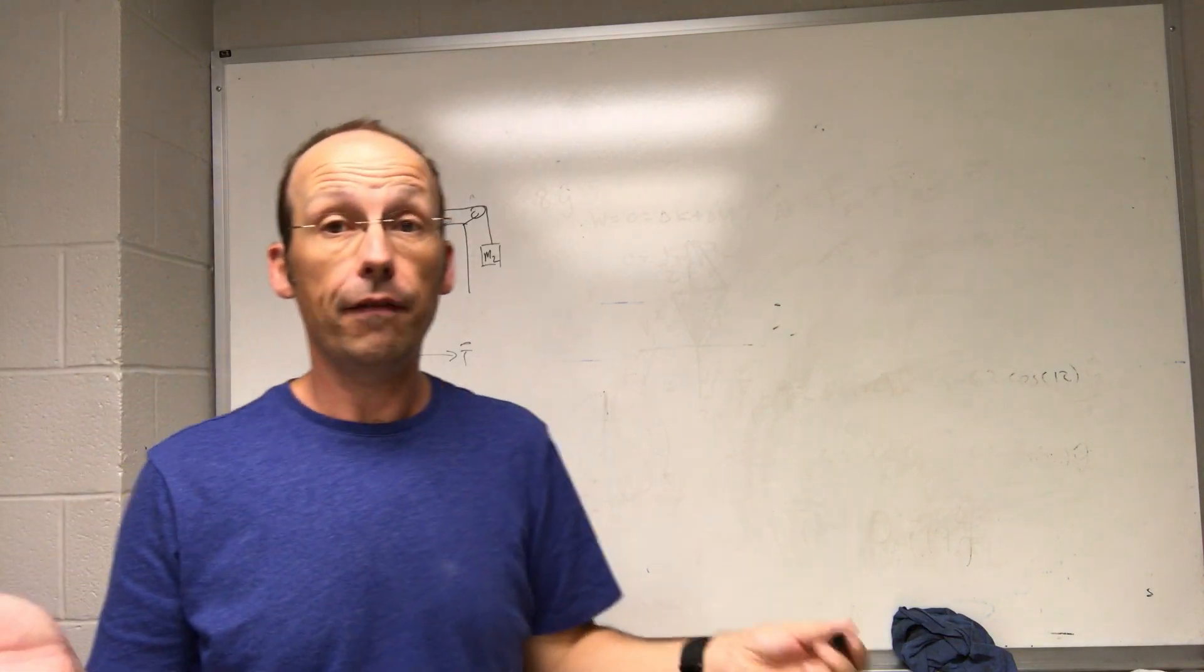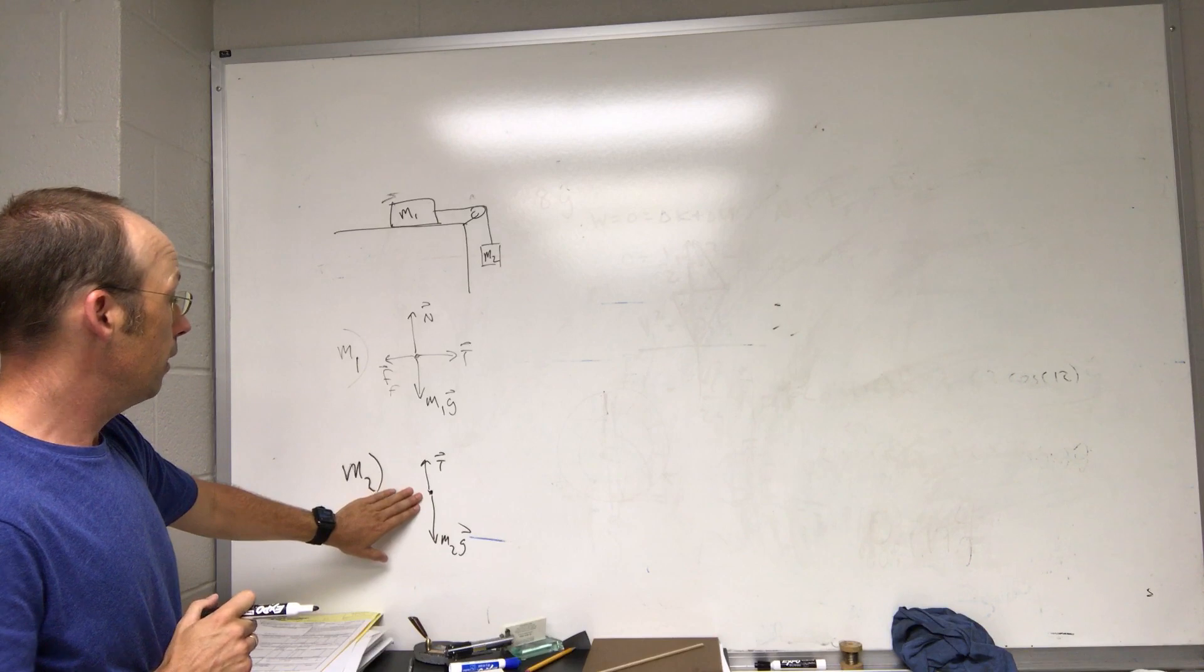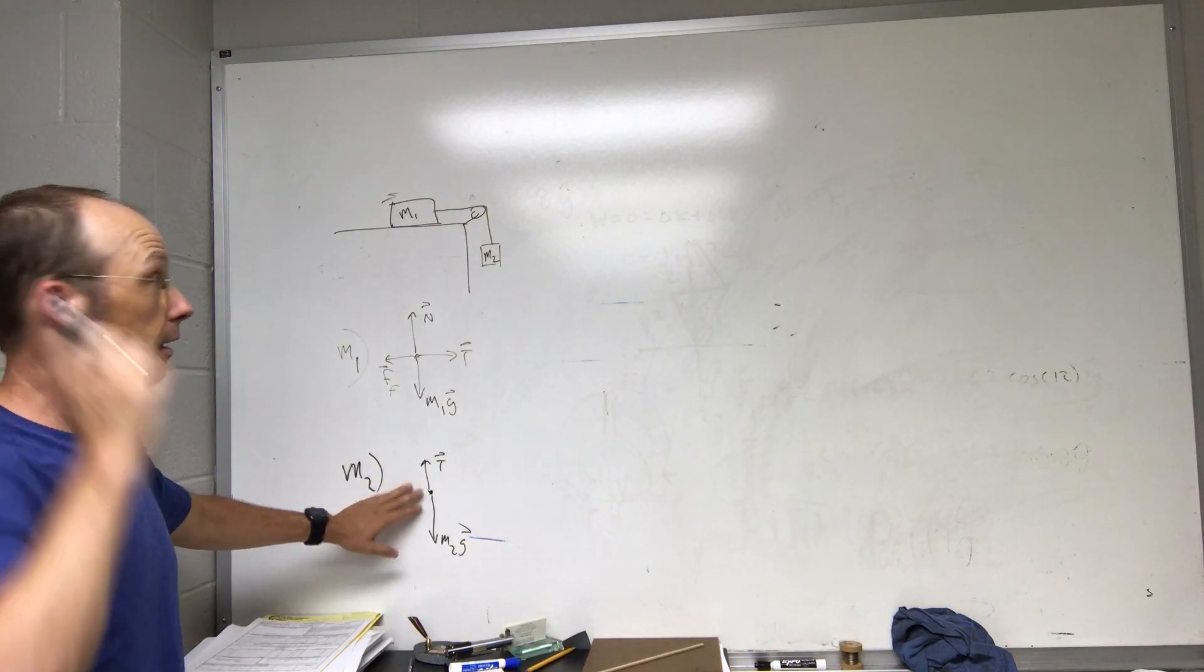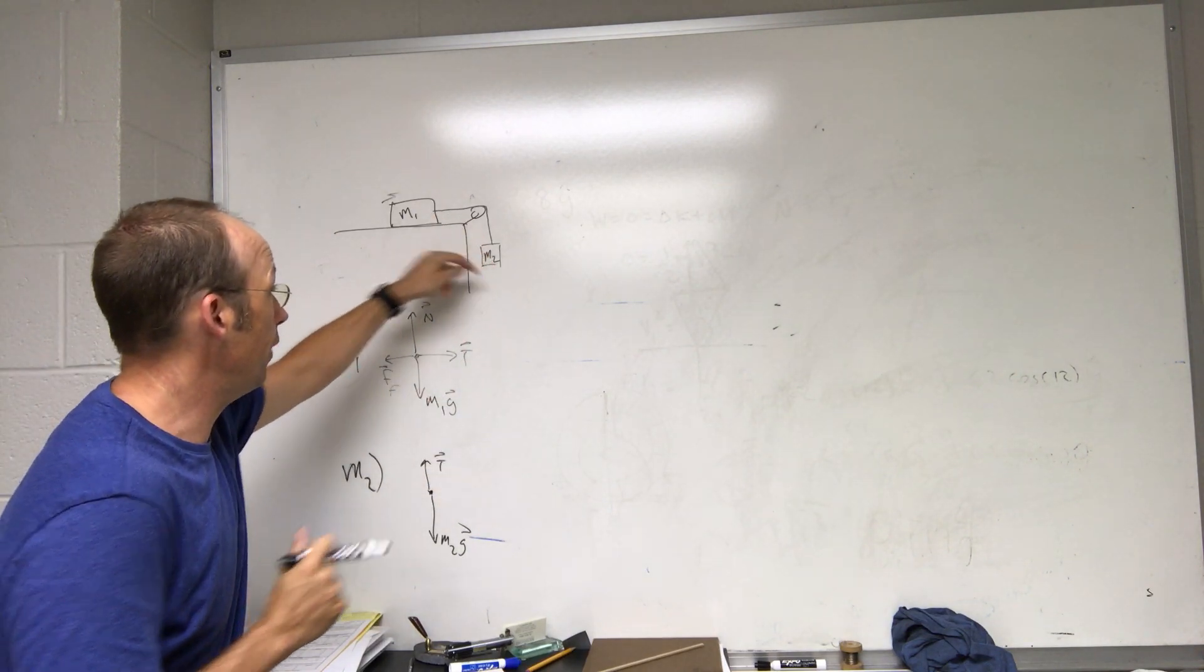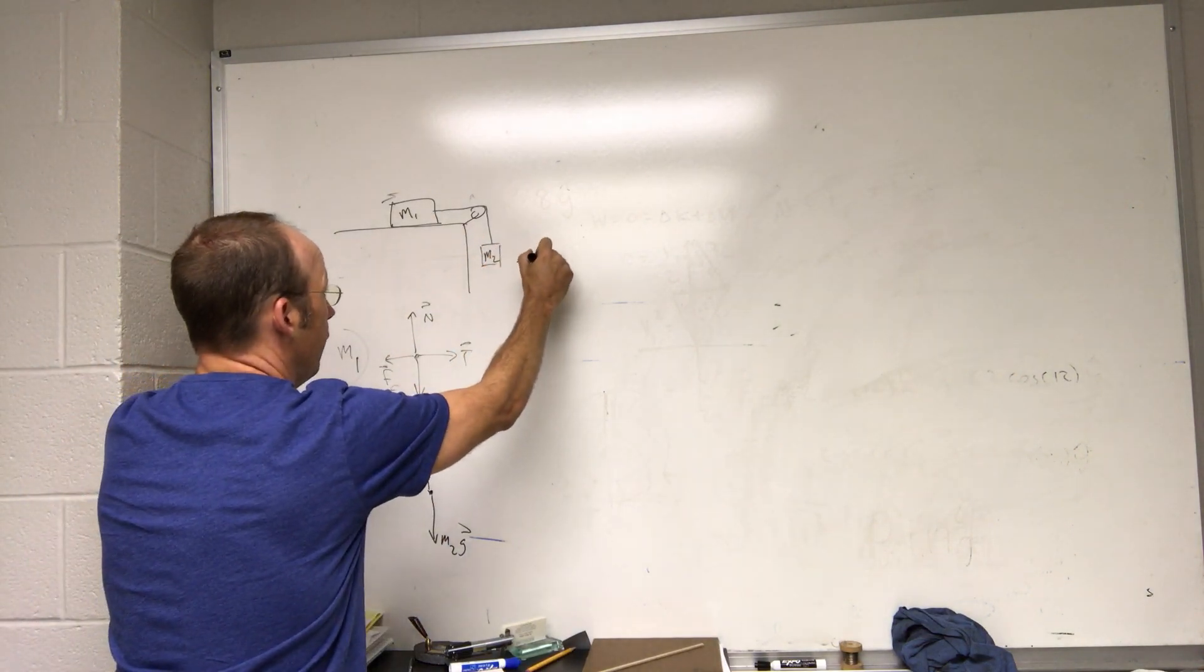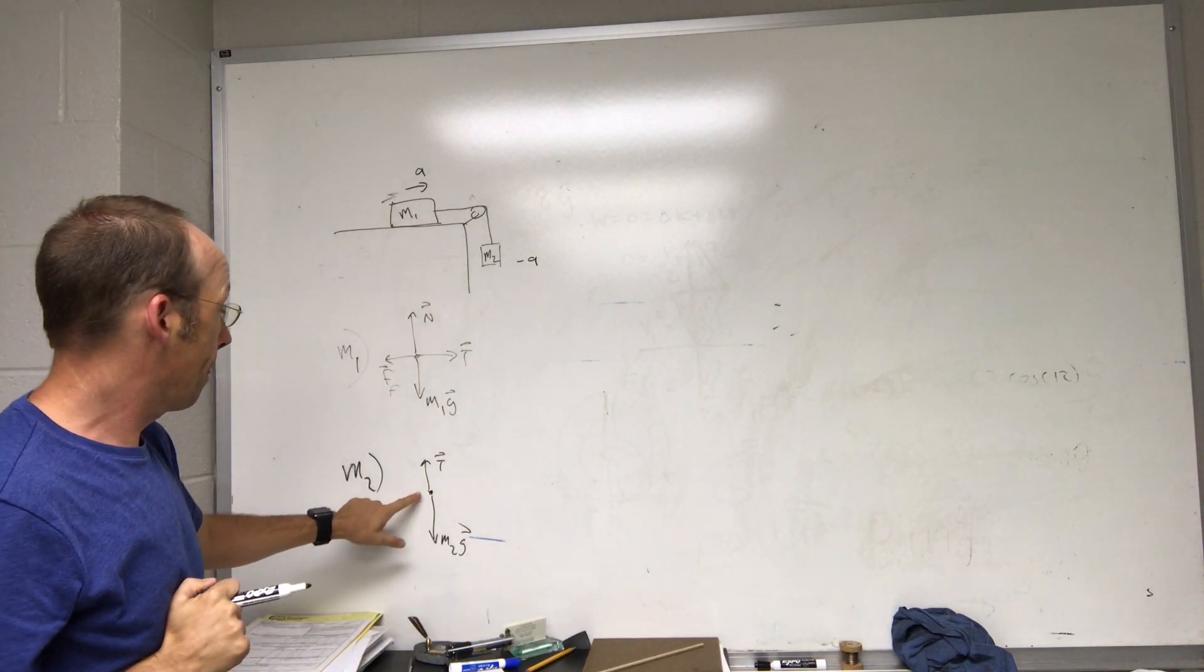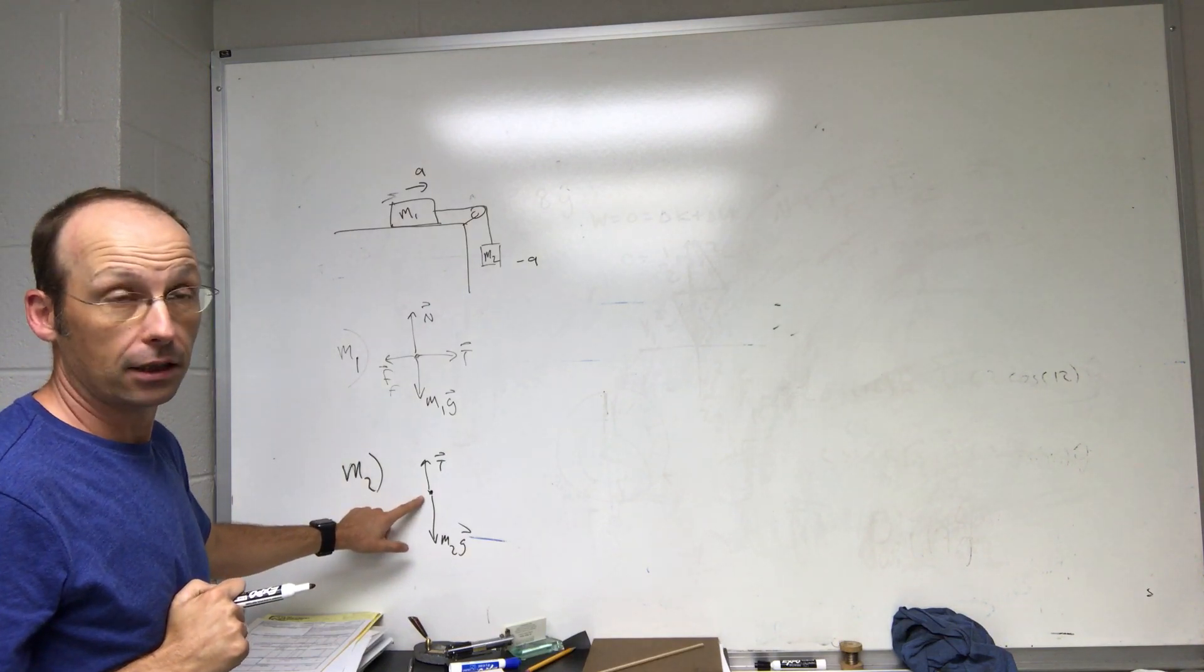Okay, I'm going to write the, let's just assume for now that it's accelerating down. So this is accelerating down with the value negative a, and this is accelerating that way with the value a. I'm going to write the sum of the forces equation for this mass in the y direction.